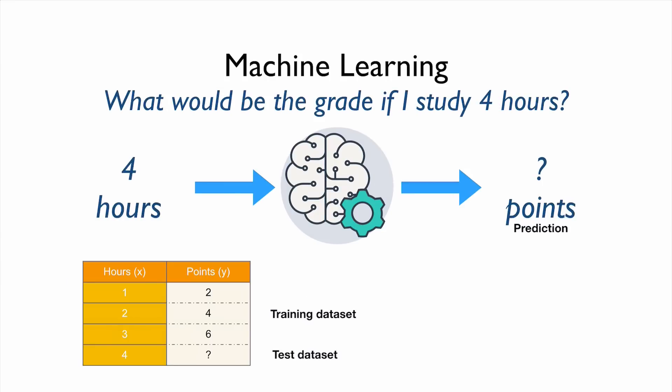Similarly, this problem, what we're going to do is we need to provide some sort of historical information. For example, previously, one hour they studied one hour and then they got two points, two hours, four points. Using this information, we train our model, and this one is called the training dataset. And then once the model is trained, we can ask this model, machine learner, that for four hours, what will be the points they may get. This is a typical machine learning concept.